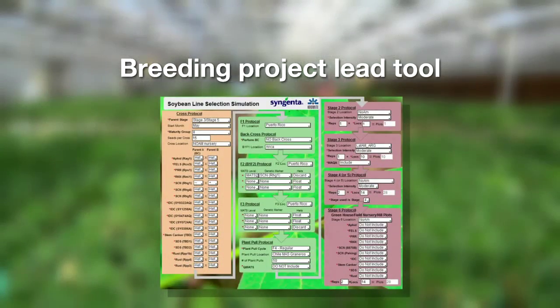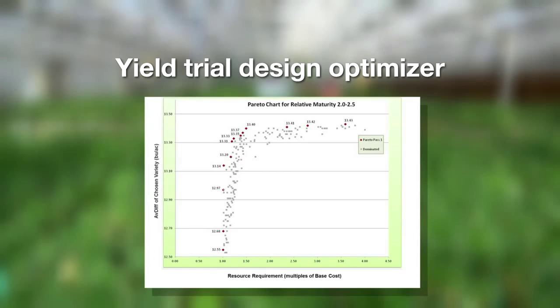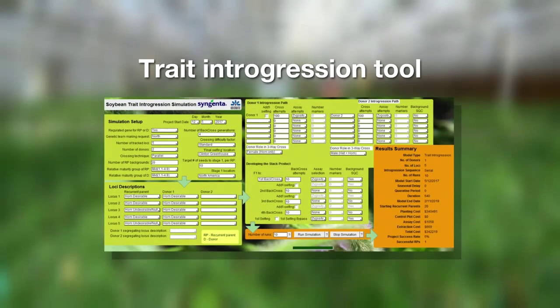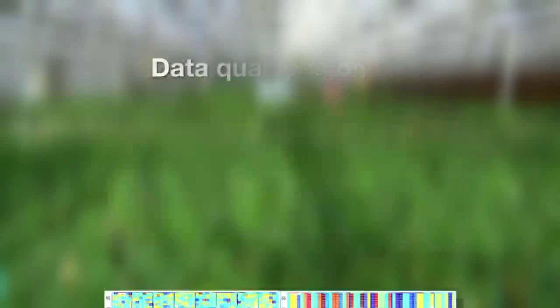Our breeding project lead tool helps the breeder get the mix of times and locations of experiments right. A yield trial design optimizer manages the complexity of a global growing operation. A trait integration tool models the complex genetic questions of how to cross-plant varieties to maximize genetic gain. And our data quality cart tool uses visualization to filter out environmental noise from field data.